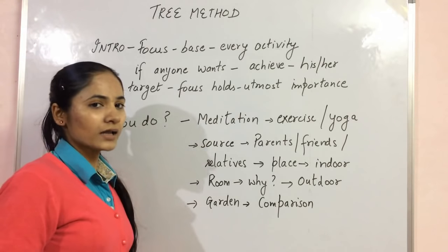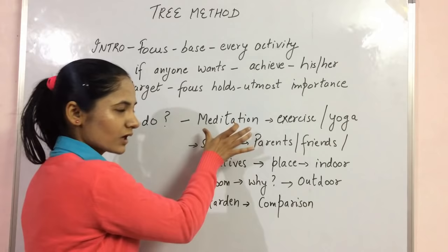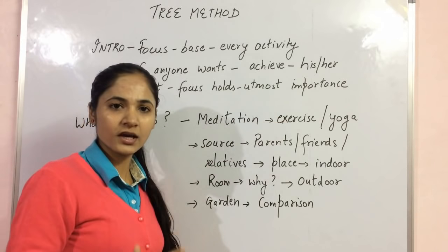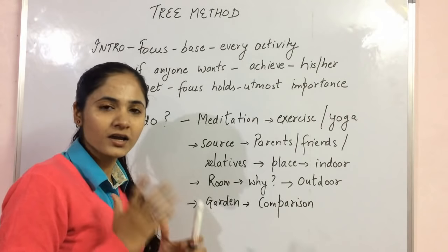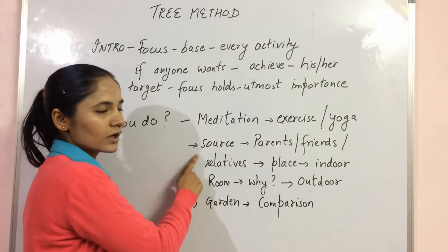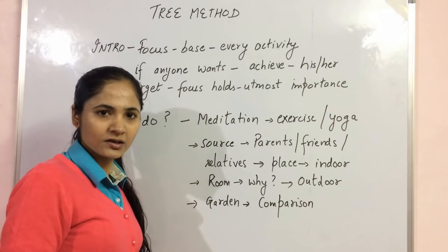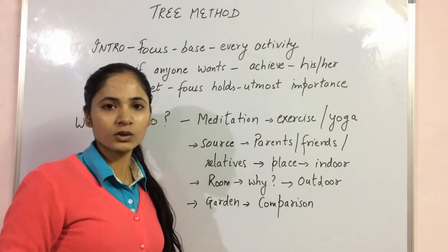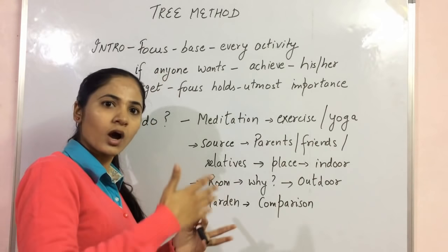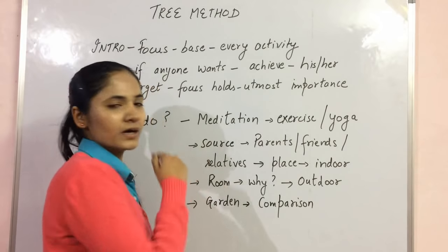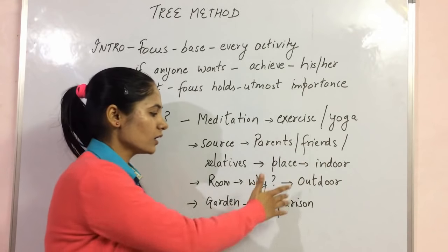For the next question — what you do — I am going to talk about meditation. I have picked exercise or yoga as my activity. Now, where do you find or practice meditation? You can mention parents, friends, relatives, or sources like TV or internet. After that, talk about the place — indoor or outdoor. If it's indoor, you can talk about your room and give a reason why you do it there. If it's outdoor, explain where you do it. You can also make a comparison between indoor and outdoor.